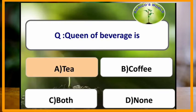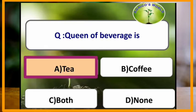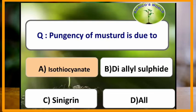Which of the following is considered as queen of beverages? Tea is considered as queen of beverages. Pungency of mustard is due to which of the following? Pungency of mustard is due to the presence of isothiocyanate.